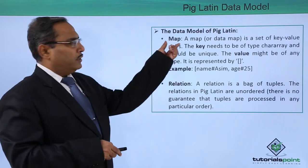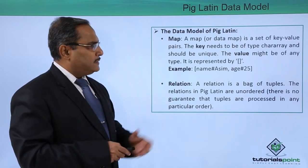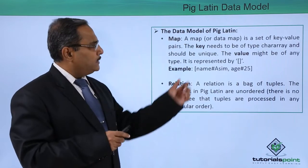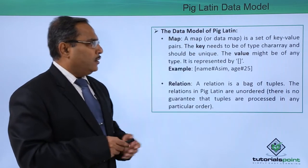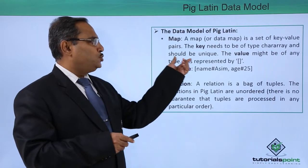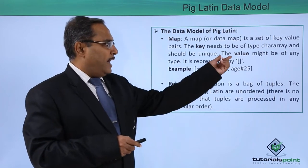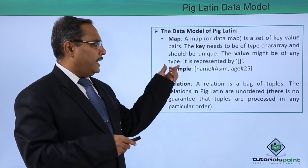Next, we are going for map. A map or data map is a set of key value pairs. The key needs to be of type character array and should be unique. The key should have some unique values there and the value might be of any type.